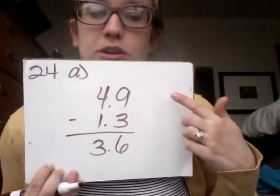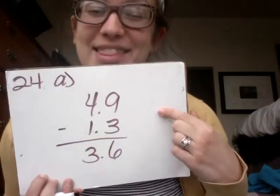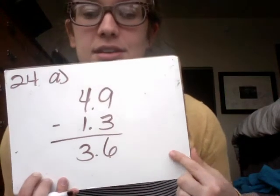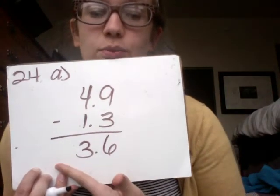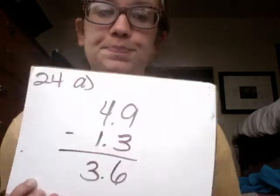Let's go ahead and work on problem 24 together. Pull out a whiteboard or a piece of paper — you can pause me if I move too fast. Let's start with 24A: 4.9 minus 1.3. Subtract three tenths from nine tenths, we get six tenths. Subtract one one from four ones and we get three. Answer: 3.6.